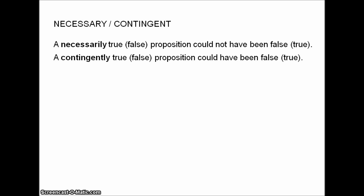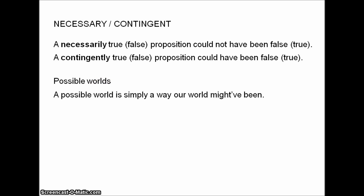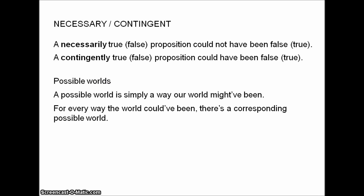The way philosophers think about necessity and contingency is by using the notion of possible worlds. A possible world is just a way our world might have been, where 'world' refers to the entire universe, not just our planet. Possible worlds are alternative universes. Now, they don't actually exist — they're only possible — but there's a possible world in which the Nazis won the war, a possible world consisting of nothing but a single talking donkey, a possible world exactly like ours except the Andromeda Galaxy is about a mile further left. For every way our world could have been, there's a corresponding possible world.